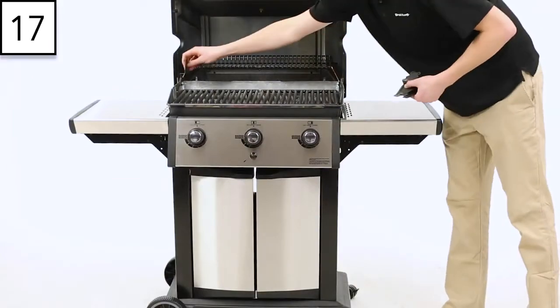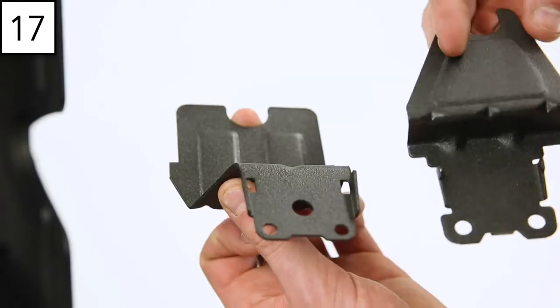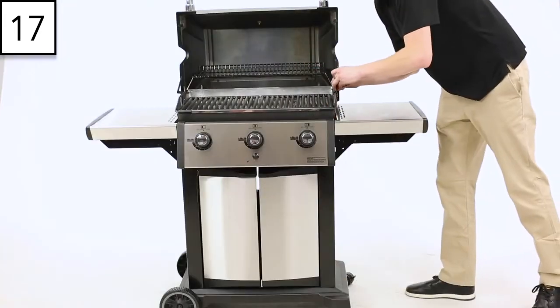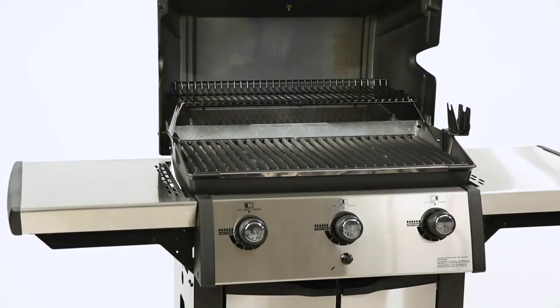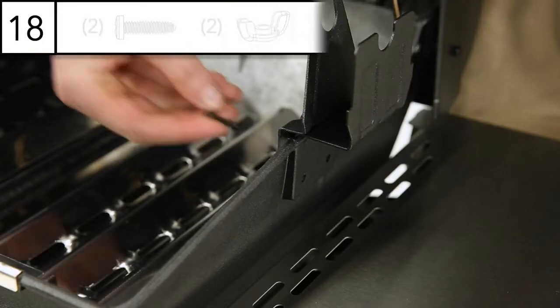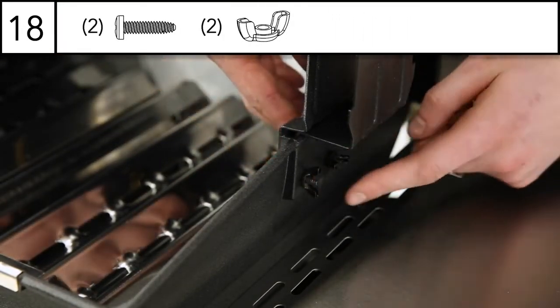Step 17. Install the rotisserie bracket with the two bolts from the inside of the cook box facing out. Step 18. Use the supplied wing nuts on the outside of the cook box to secure the bracket in place.